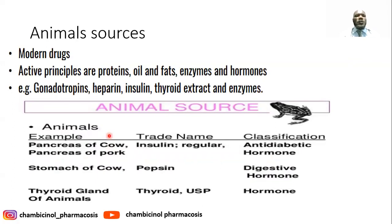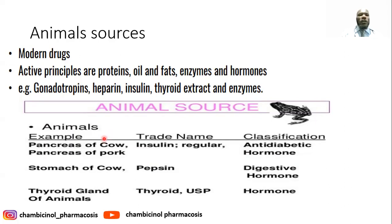You can also obtain drugs naturally from animals. These are active principles including oils, proteins, fats, enzymes, and hormones. Examples include corticotropin, heparin, insulin, thyroid extract, and various enzymes obtained from animals.